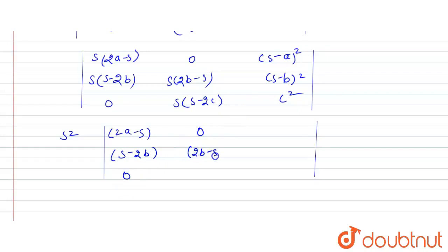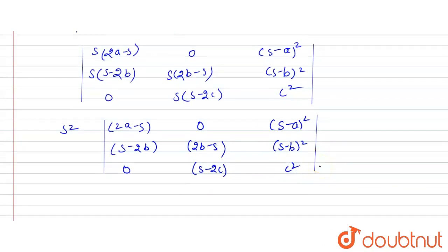Zero, 2b minus s, s minus 2c; s minus a whole squared, s minus b whole squared, c whole squared. Now expanding the above determinant,